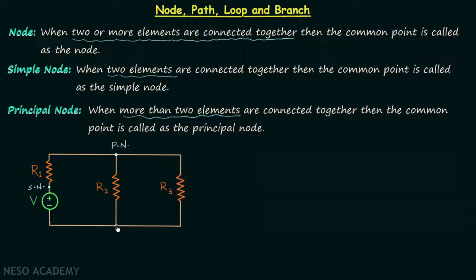Similarly, this other node is also a principal node because three elements are connected together there: the voltage source, resistance R2, and resistance R3, all connected at this common point. So I hope you now understand what a node is, what a simple node is, and what a principal node is.